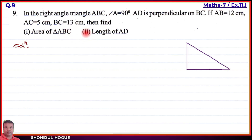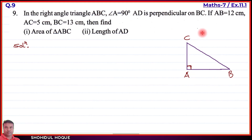For question number two, length of AD. Let's draw the triangle ABC. The angle A is 90 degrees, so angle A is a right angle. AD is perpendicular on BC — this perpendicular creates a 90 degree angle. So we draw the triangle and mark the perpendicular AD from vertex A to side BC.